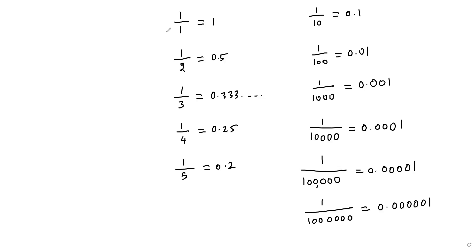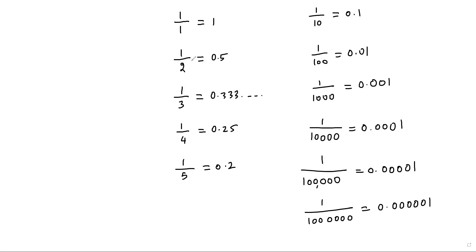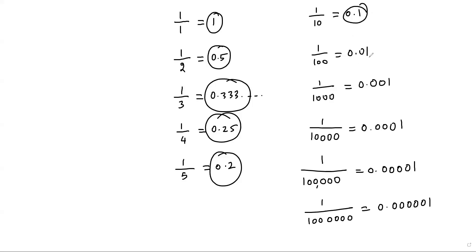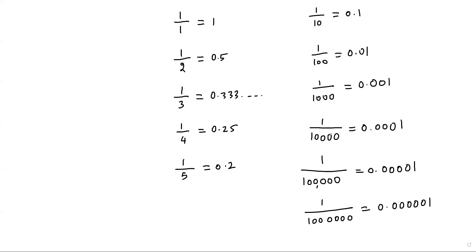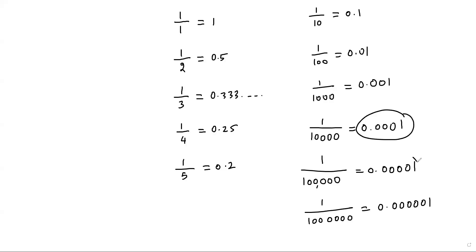Every time I divide the same number one by a different value: one, two, three, four, five, ten, one hundred, one thousand. When I keep increasing the value of the divisor, the value of the fraction keeps decreasing — one, zero point five, zero point three three three, zero point two five, zero point two, zero point one, zero point zero one. When I take large values like ten thousand or one million, the value of the fraction gets closer to zero.